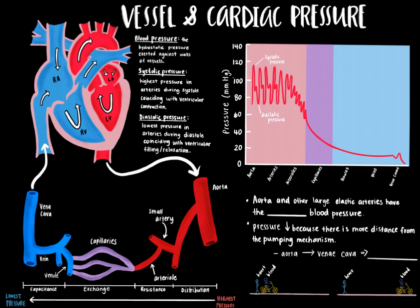Blood flows from an area of high pressure to an area of low pressure, and thus the greater the pressure gradient, the greater the blood flow. Because it is the contraction of the heart that generates the highest pressure — that is systolic pressure — blood will move down the pressure gradient away from the heart to the distant tissues. The aorta and other large elastic arteries will have the highest blood pressure because they receive blood immediately from the heart. As blood moves away from the heart into elastic arteries, then into muscular arteries, then into arterioles and so on, blood pressure continues to drop. The pressure decreases because there is more distance from the pumping mechanism, and blood flow slows down.